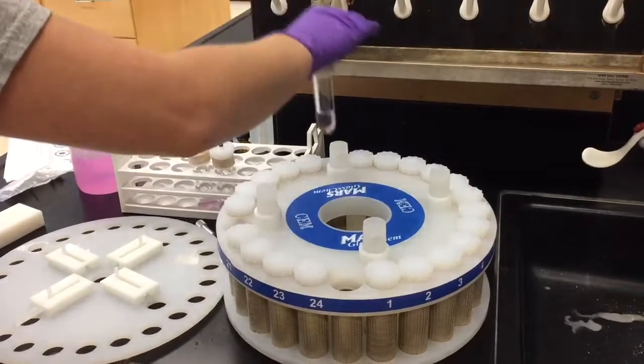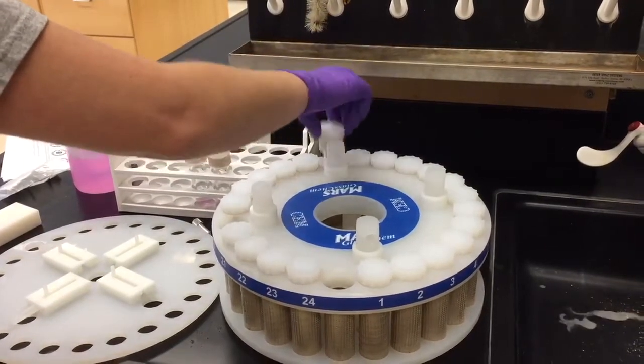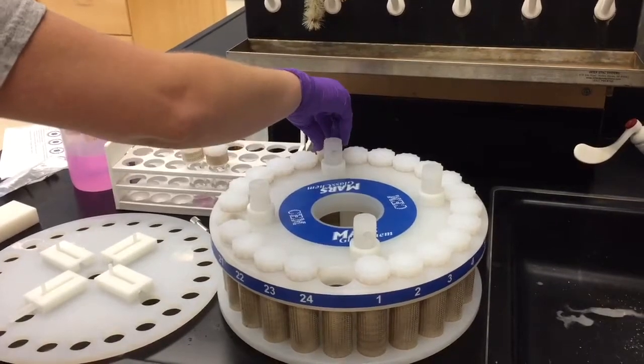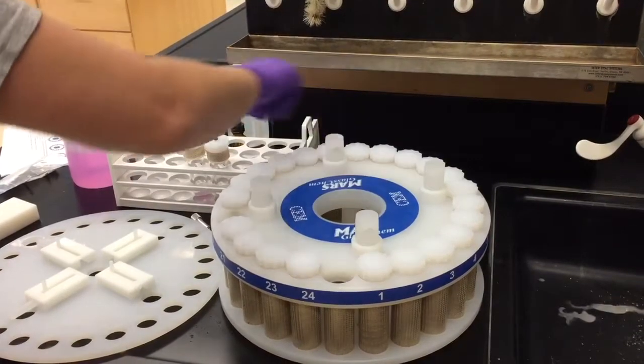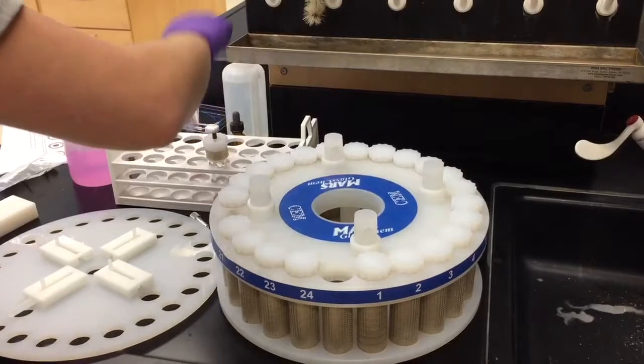For instance, if one vessel goes in number 1, the other must go on the opposite side in number 13. The remaining two vessels must go in number 7 and 19.